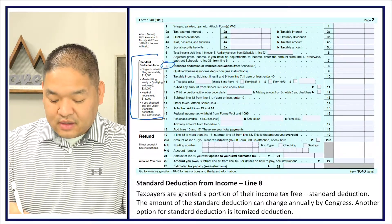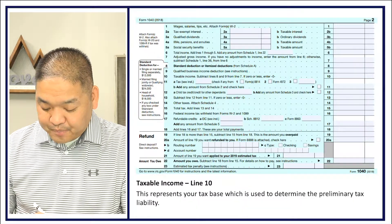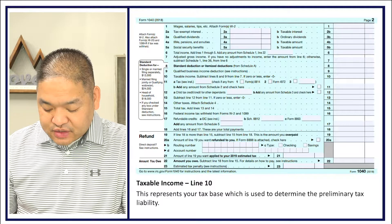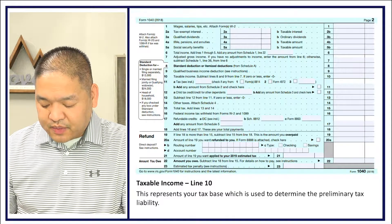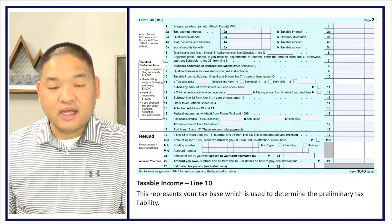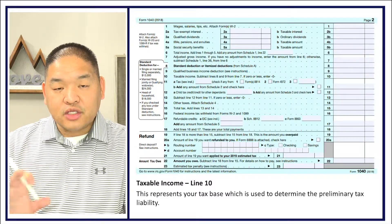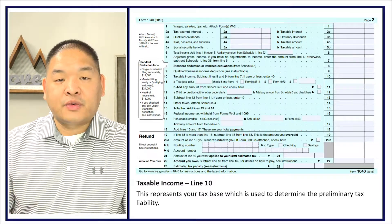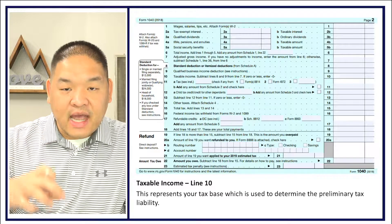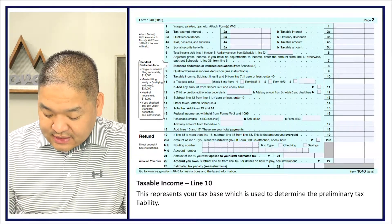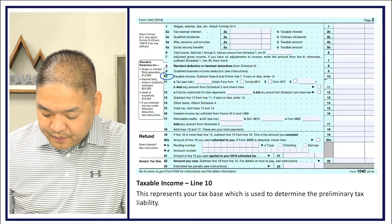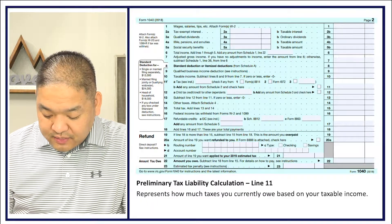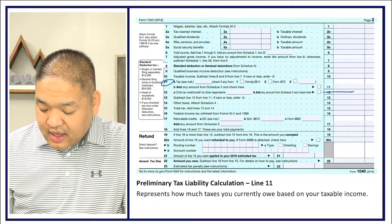Line 10 is taxable income — this represents your tax base, which is used to determine your preliminary tax liability. Once all adjustments are made, this is the amount the government will tax you on. We then apply the applicable tax rate to this tax base on Line 10.